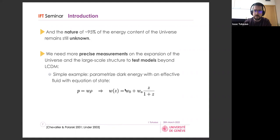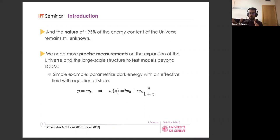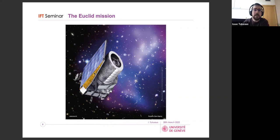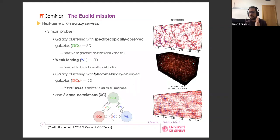One of the best ways to make these observations is to use galaxy surveys, which can provide very precise measurements on both the expansion and large-scale structure, and therefore test different extended models. One of these future surveys is the Euclid satellite — here you can see this beautiful artist's view of the spacecraft, which is now essentially built and expected to launch in April–May 2023.